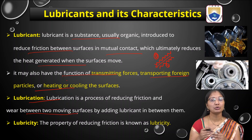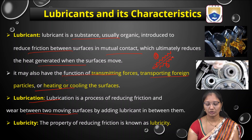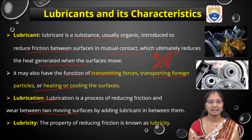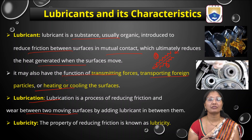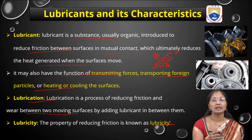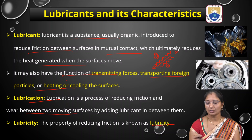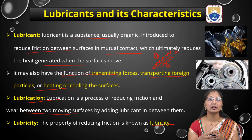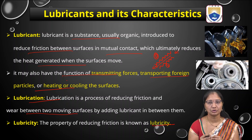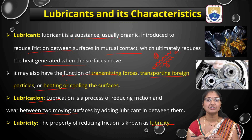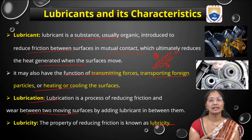Between two moving surfaces, if friction is reduced, that process is called lubrication, and the property of reducing friction is called lubricity. Here we can see gears — on movement of these two gears, friction happens and heating of the surface occurs. To reduce this friction, lubricants are used. On a rotating engine, it causes friction, which is reduced by adding lubricants.